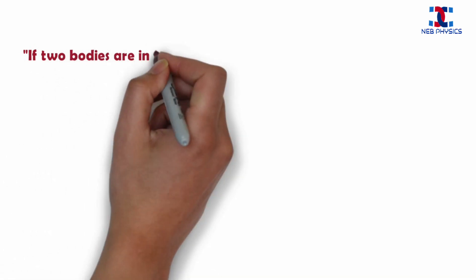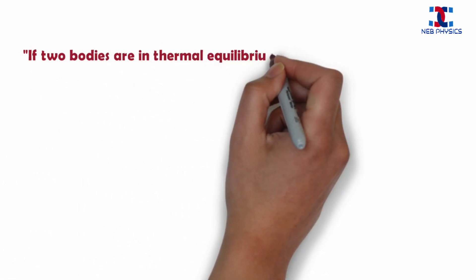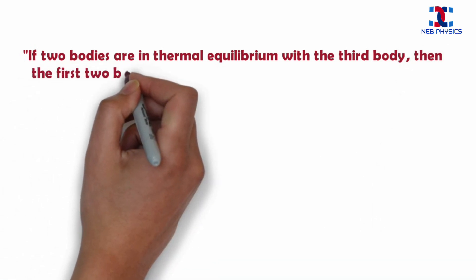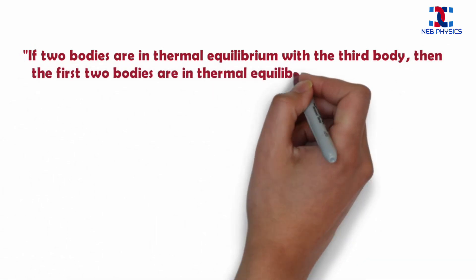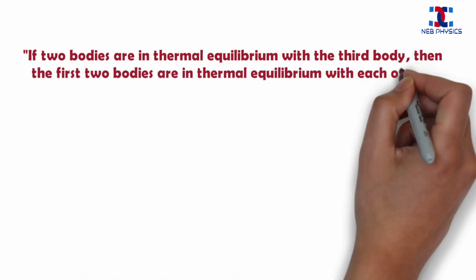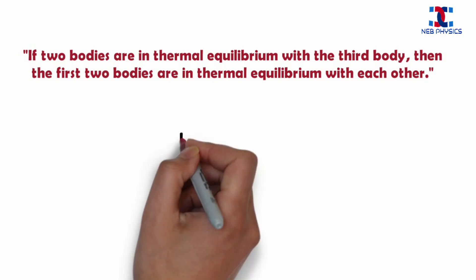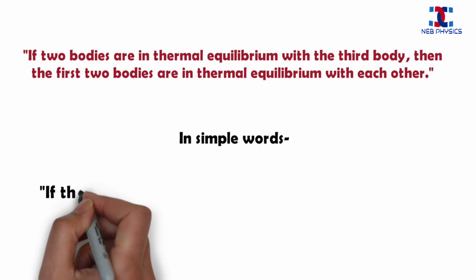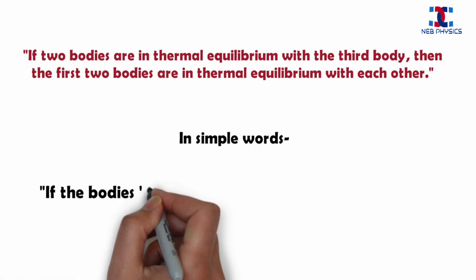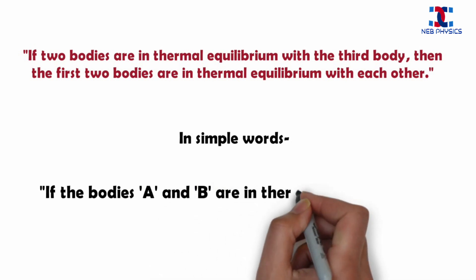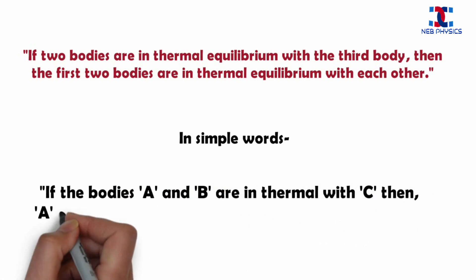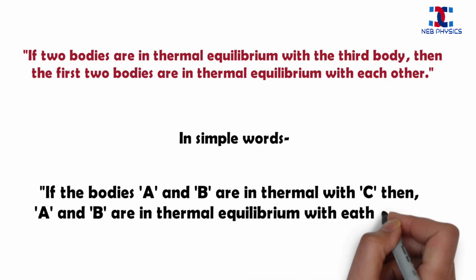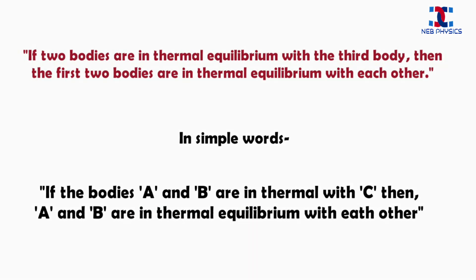According to the zeroth law, if two bodies are in thermal equilibrium with a third body, then the first two bodies are in thermal equilibrium with each other. Or in simple words, if two bodies A and B are in thermal equilibrium with C, then A and B are in thermal equilibrium with each other.